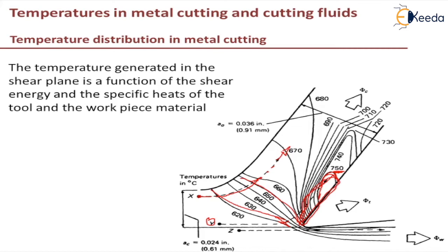The maximum temperature in the entire temperature distribution is what the Y particle achieves because of the chip-tool interface. As it passes over the chip it is cooled, and the heat is conducted into the body of the chip. Eventually the chip achieves a uniform temperature throughout. Once it crosses this zone, cooling takes place as heat gets transferred into the body of the chip.